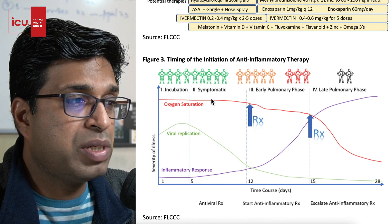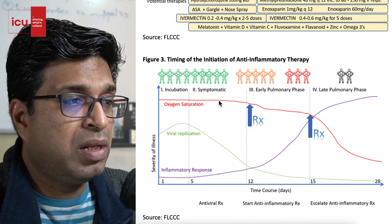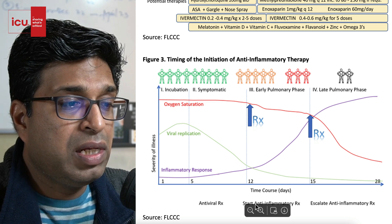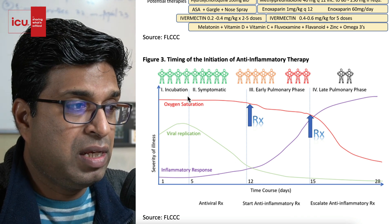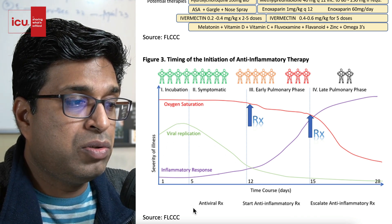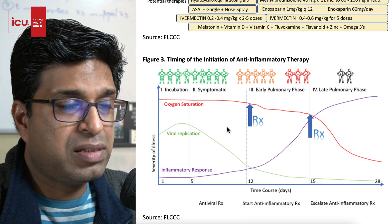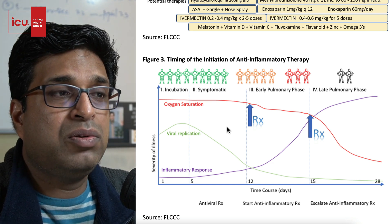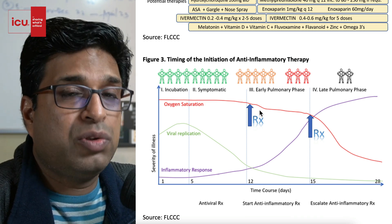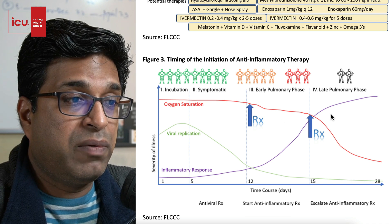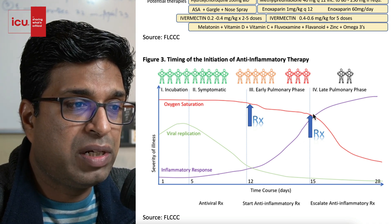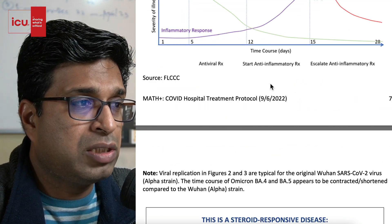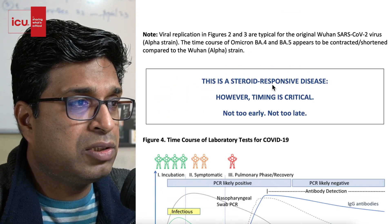In the incubation and symptomatic stages, oxygen saturation will be good. When it starts to fall in the early pulmonary phase — where the lungs start getting involved — start anti-inflammatory therapy, meaning steroids. While in the phase where viral replication is maximum, give antiviral therapy; don't start steroids before that. Roughly until about seven to eight days from symptom onset, give antiviral therapy only. Steroids should only be given to patients developing hypoxia. When saturation sharply dips, you can escalate anti-inflammatory therapy like tocilizumab.